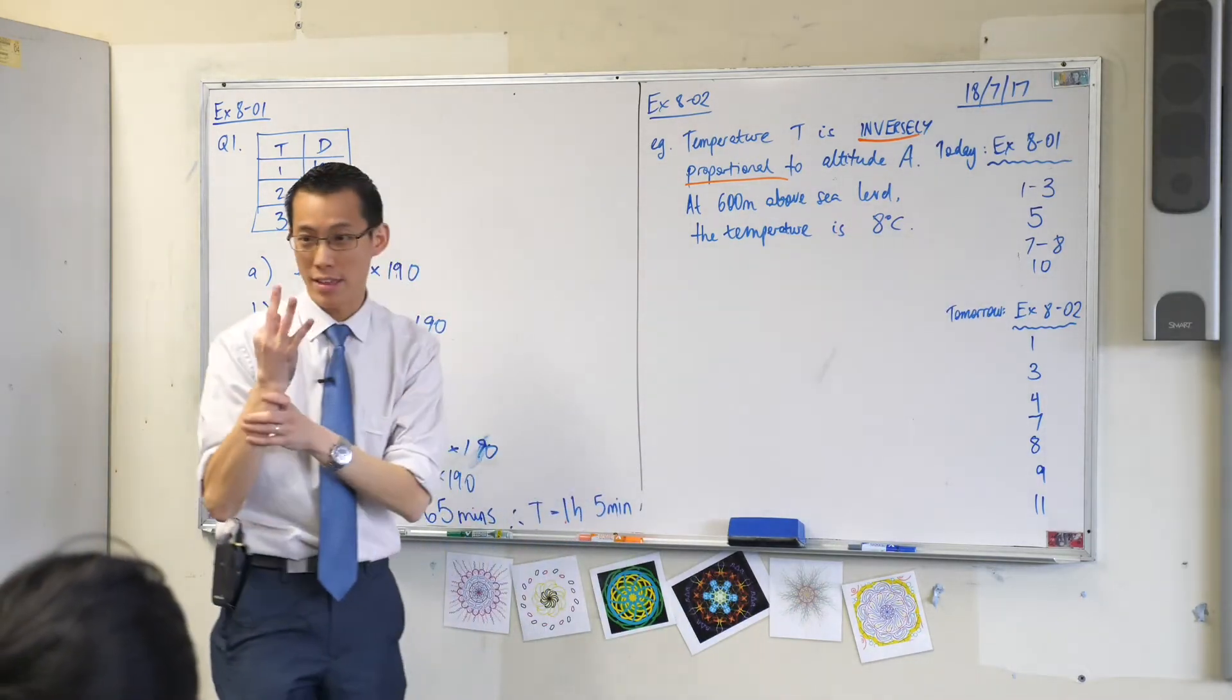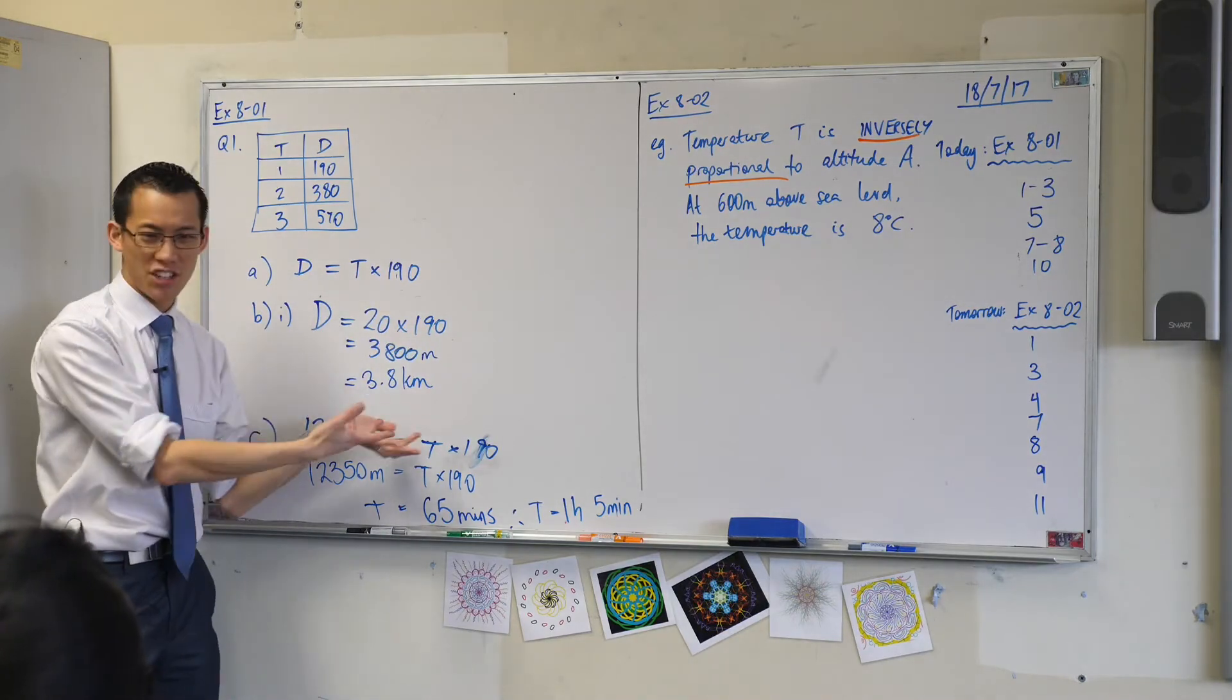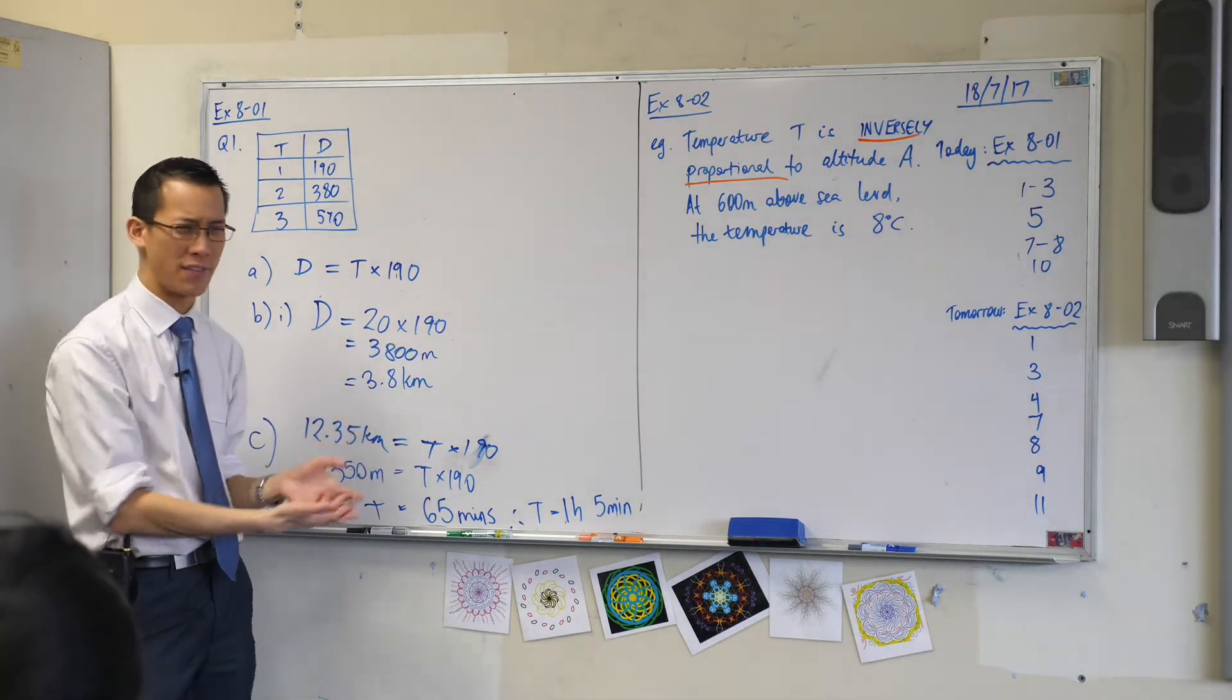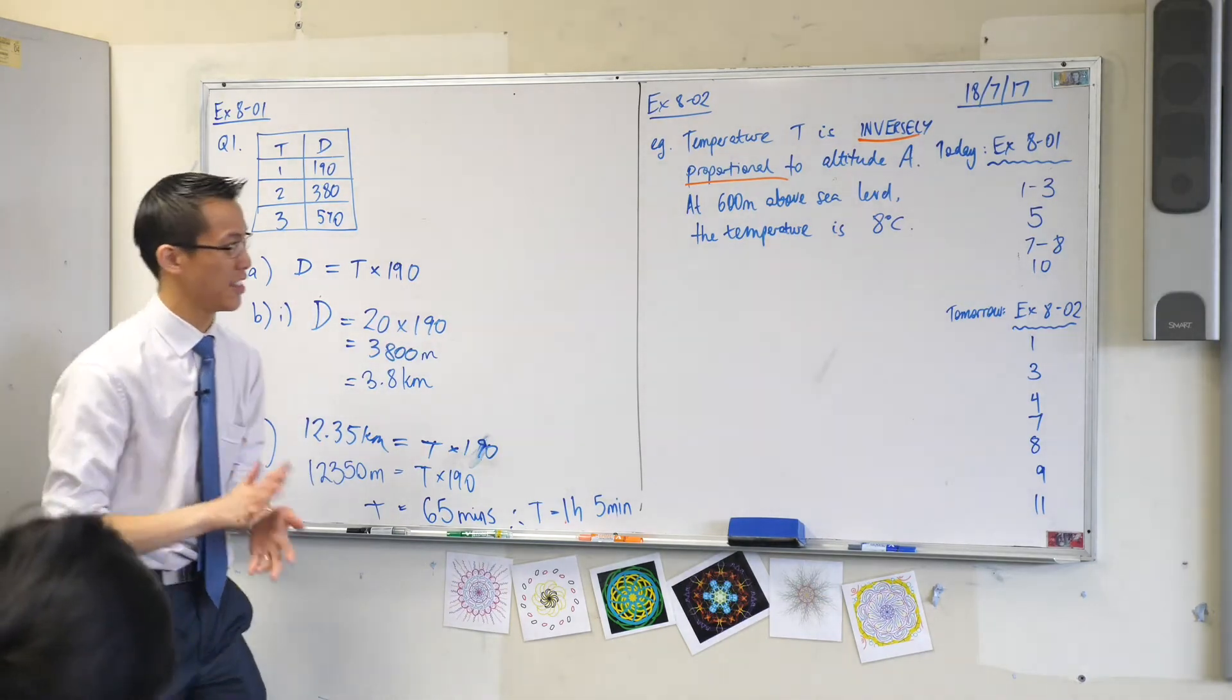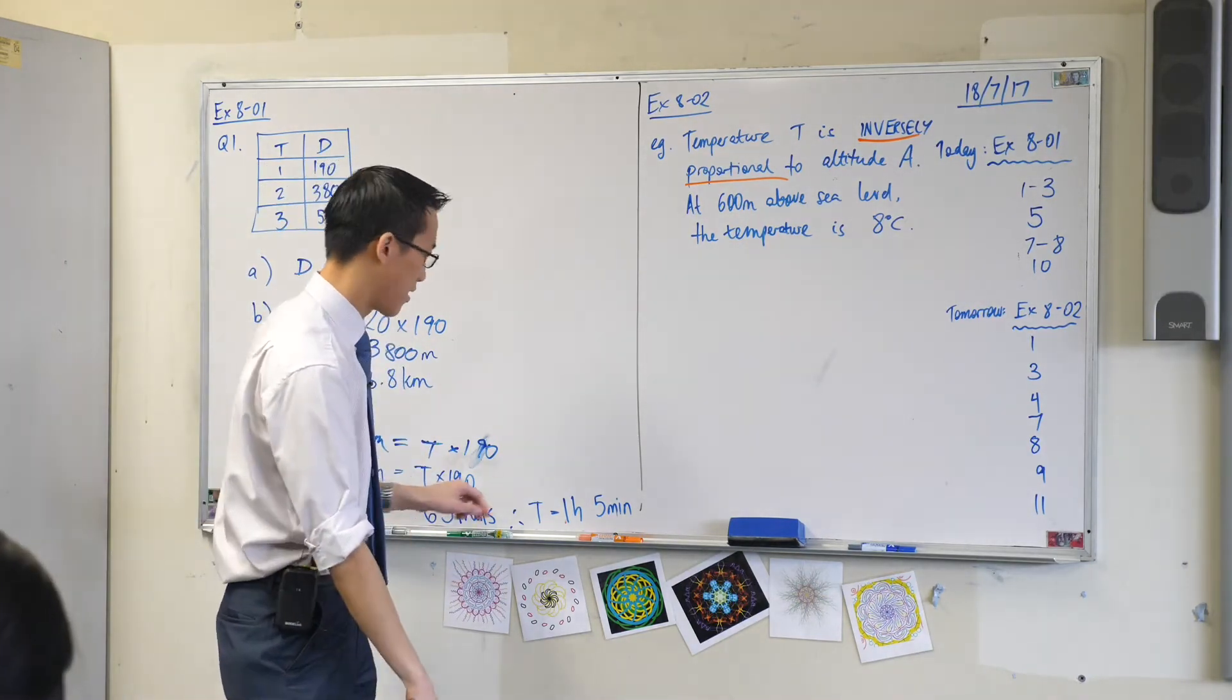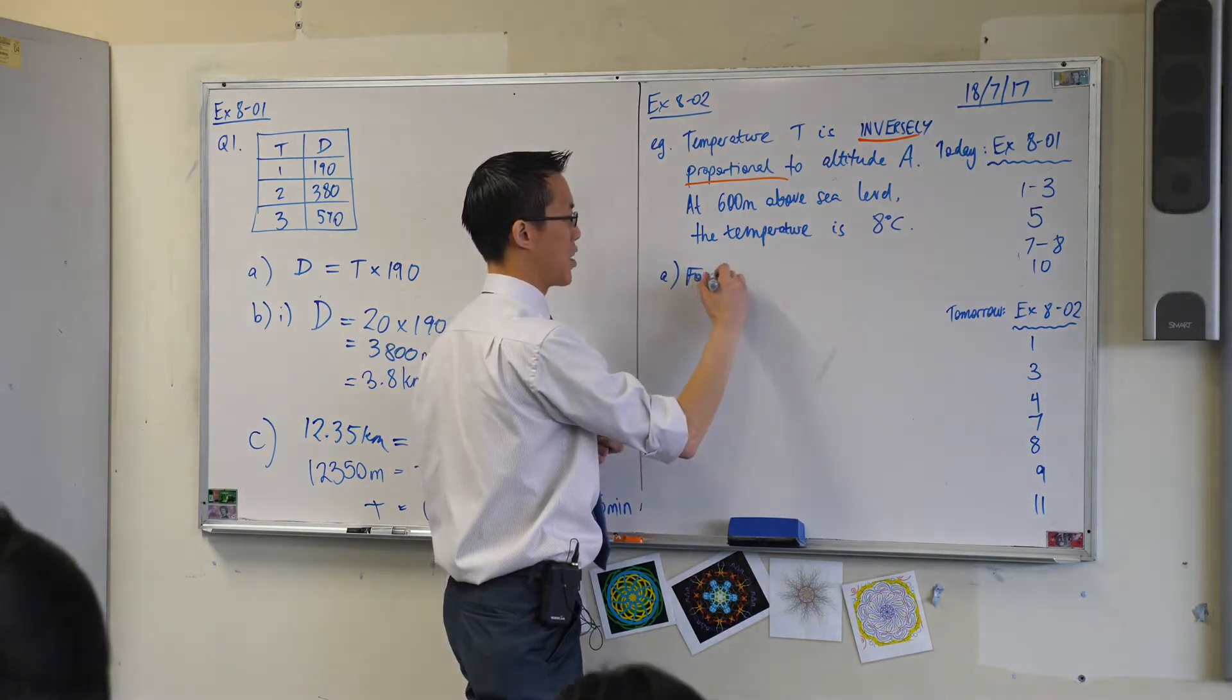At 600 meters above sea level, they just give us this as an example, the temperature is eight degrees Celsius. So we're going to do three things with this. Number one, we're going to form an equation just like we did before. We're going to test out how we use that equation to find out a value, and then lastly we're going to graph, and here's where it really gets interesting.